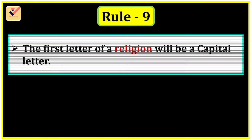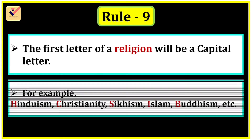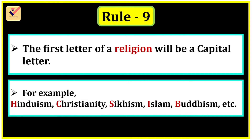Rule 9: The first letter of a religion will be a capital letter. For example: Hinduism — H is capital; Christianity — C is capital; Sikhism — S is capital; Islam — I is capital; Buddhism — B is capital.